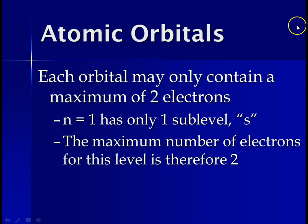So each atomic orbital may only contain a maximum of two electrons. So when we're talking about the principal level n equals one, since it only has the one sublevel, and if there's only one sublevel, it's S, then the S sublevel we saw has one orbital.